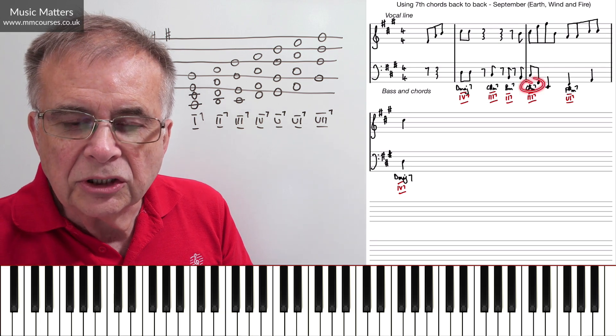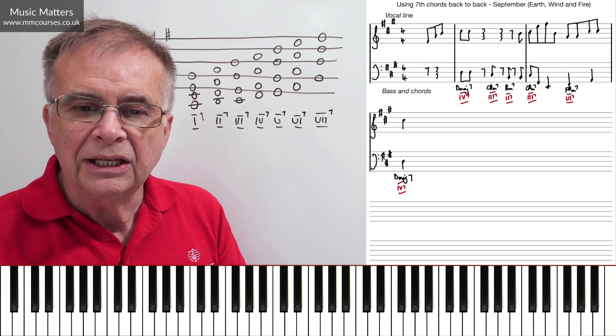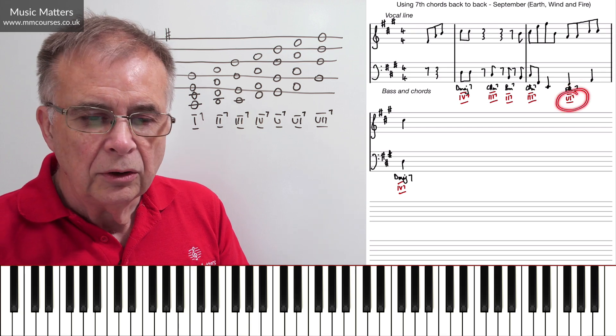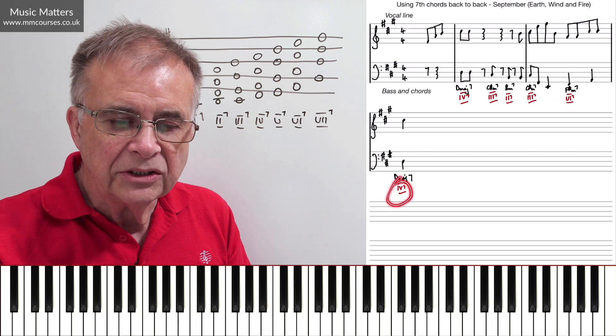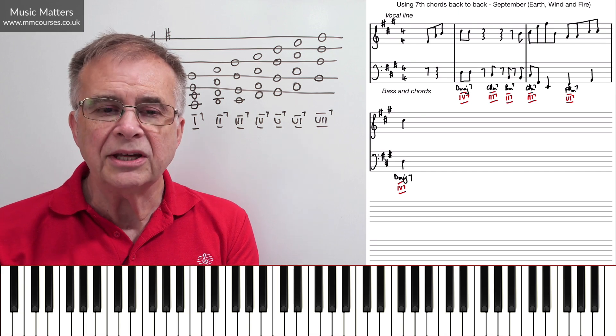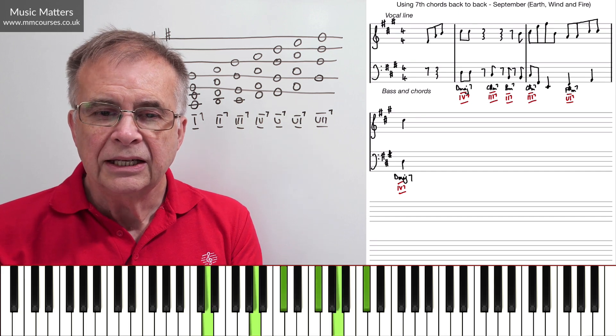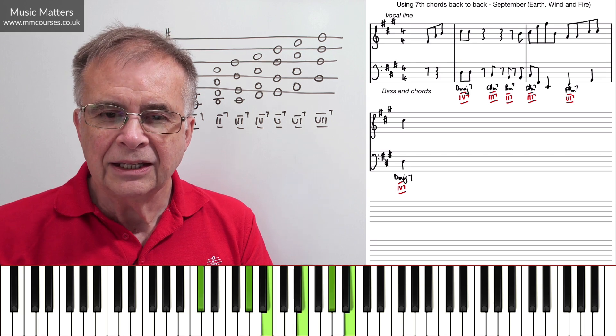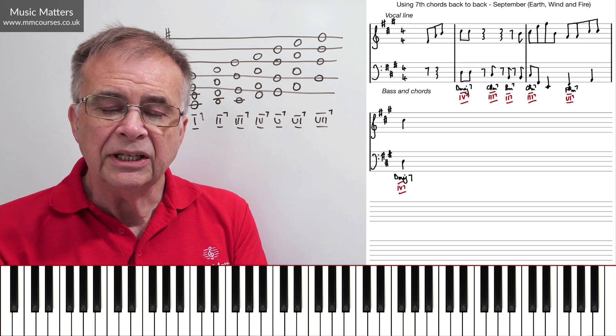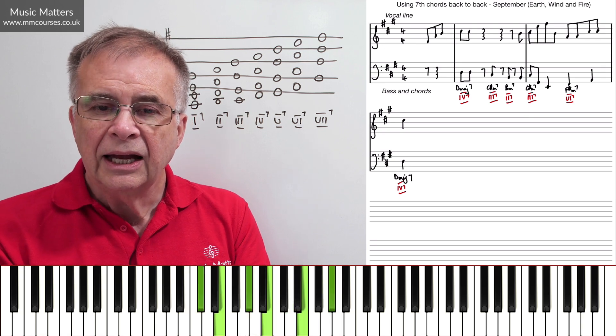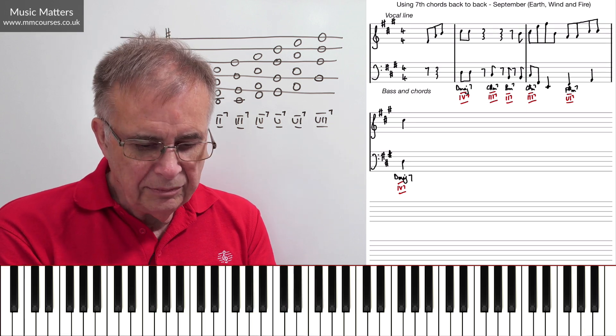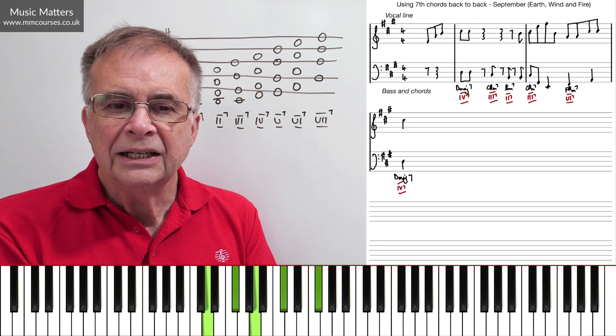Then we go back to a C-sharp minor seven, or a III7. Then we have a little leap here, and you see we're going to F-sharp minor seven, or a VI7, before we go back to that IV7, that D major seven. So this is the chord pattern. You've got D major seven, IV7. C-sharp minor seven, III7. B minor seven, II7. C-sharp minor seven again, III7. And then F-sharp minor seven, so VI7. And then D major seven, IV7. So you see, it's just this idea of seventh chords back to back.